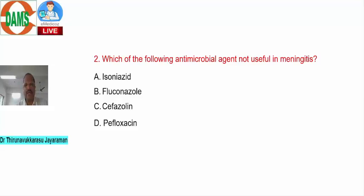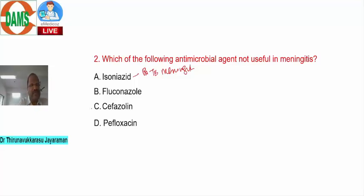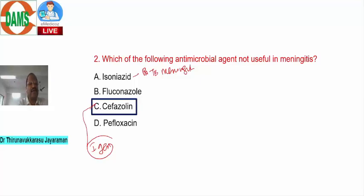Next question: which of the following antimicrobial agents is NOT useful in meningitis? Options include isoniazid, fluconazole, cephalothin, and pefloxacin. Isoniazid is lipid-soluble and easily crosses the blood-brain barrier, so it is useful for tuberculous meningitis. Fluconazole, an antifungal, is also useful for meningitis. Cephalothin is a first-generation cephalosporin, which cannot adequately cross the blood-brain barrier — so the answer is option C.